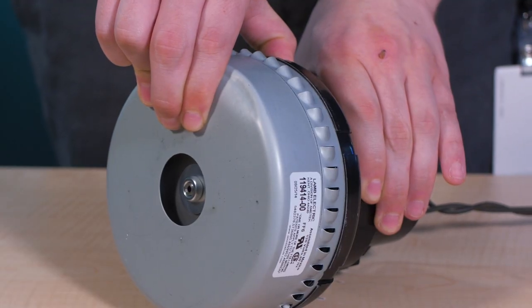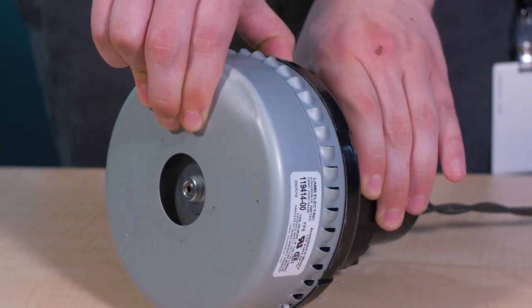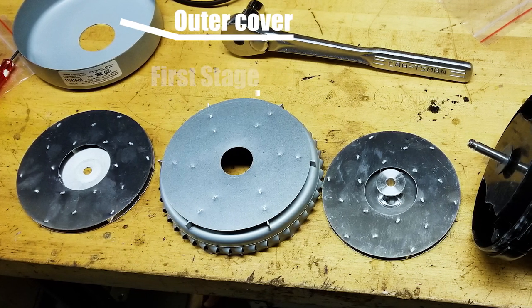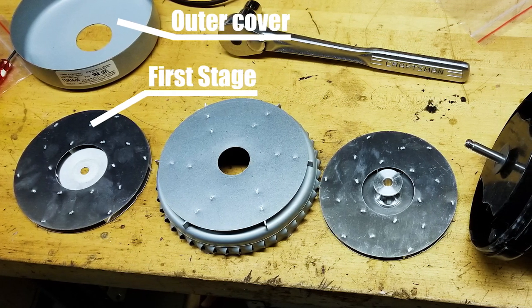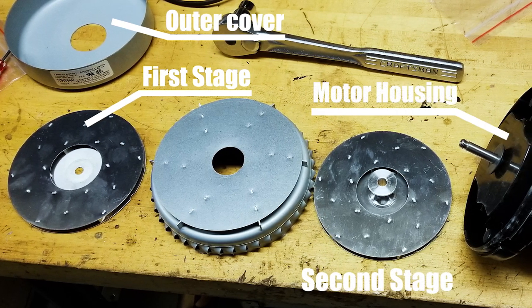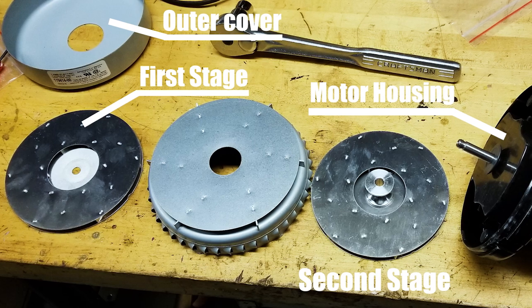The first step in our disassembly was to pop off the outer part of the enclosure to reveal the components of the vacuum assembly. Removing it allows the removal of the blower components and gives a good view of the two stages, showing how they take in air at the center and exhaust it at the outer diameter of the housing.